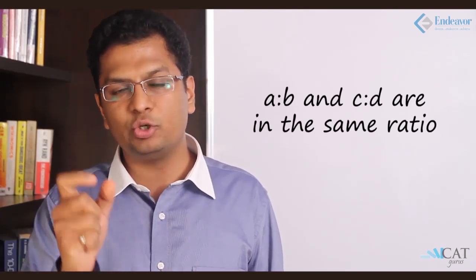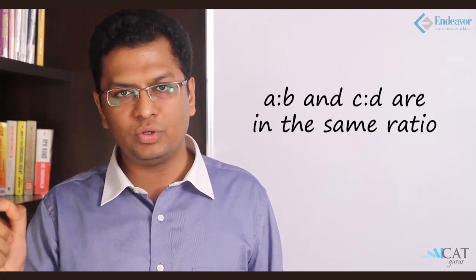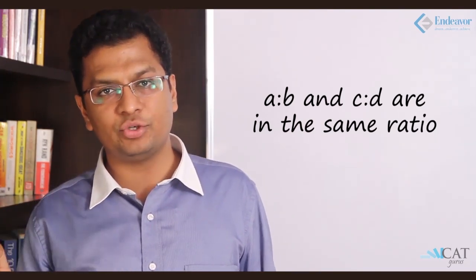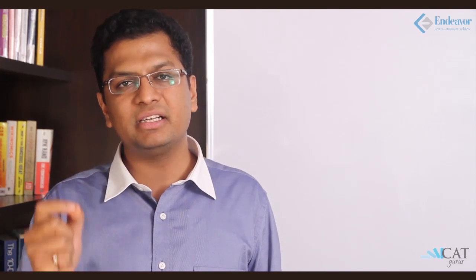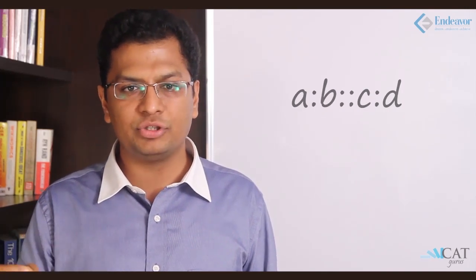Let's take what is proportion. A proportion is nothing but when A and B and C and D are said to be in the same ratio. A is to B are in a ratio and C is to D are in the same ratio. A, B and C, D are nothing but in the same ratio, so they can be said as A is to B equal to C is to D. A, B, C, D are in a proportion.